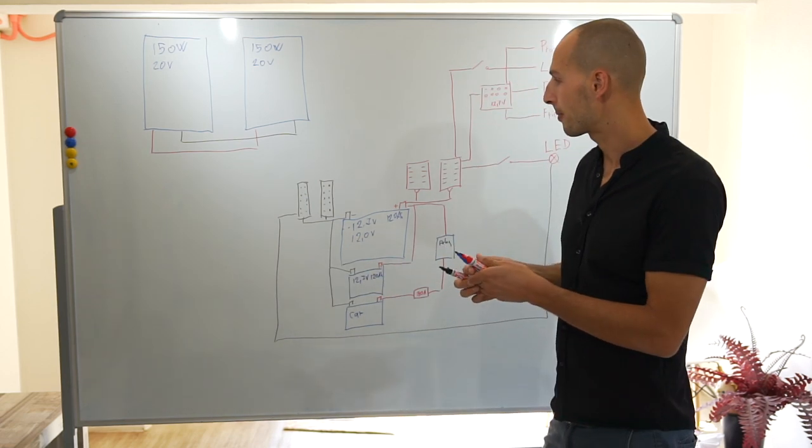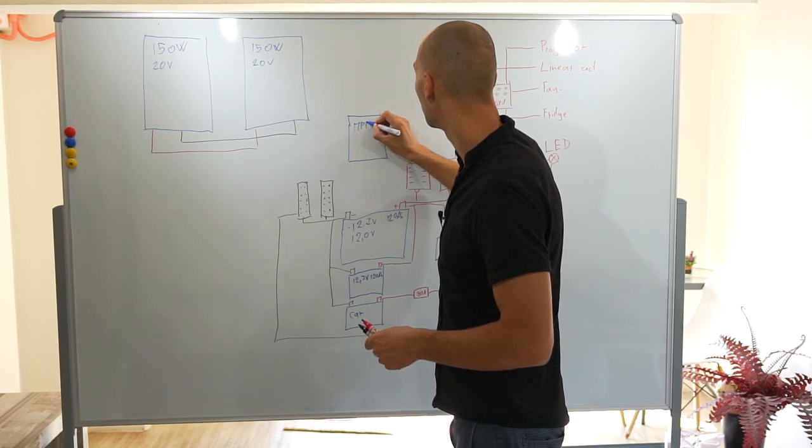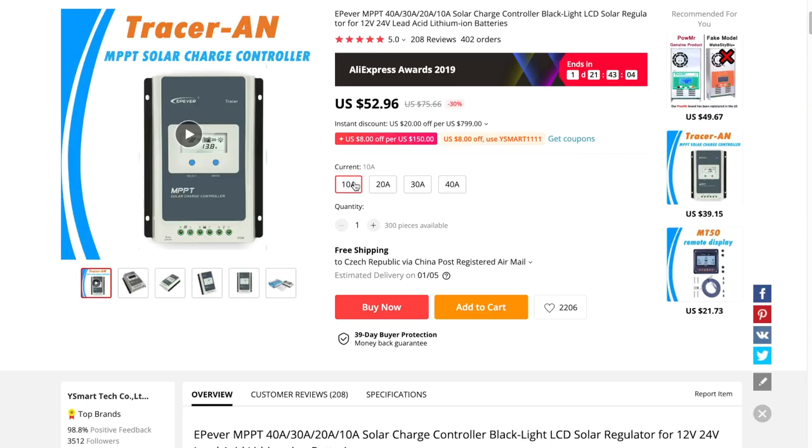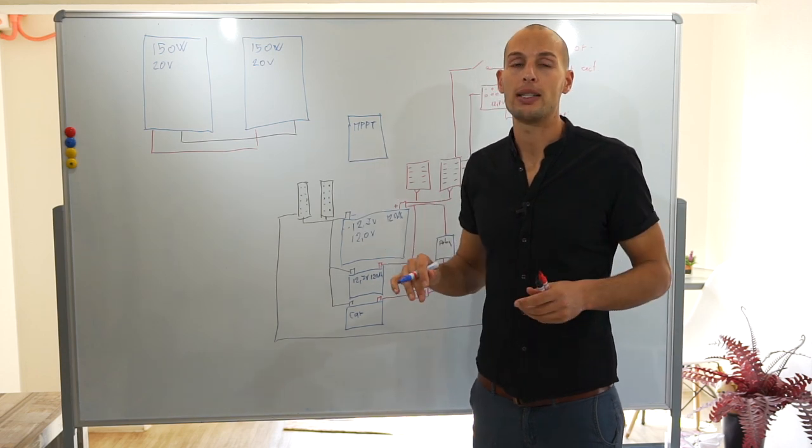So you need a device that will be taking care of this: an MPPT controller. So this one is smart. It sees what battery you have or you can configure, and then it sees when the battery is almost fully charged. So it slows down the charging progress and it's absolutely amazing.